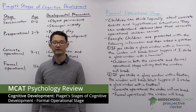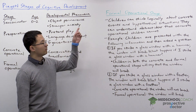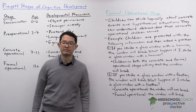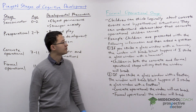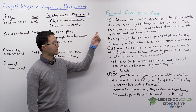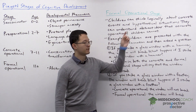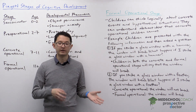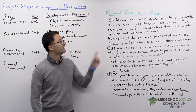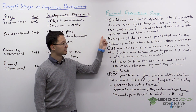In this video, we're going to go over the last stage of Piaget's Stages of Cognitive Development, the formal operational stage. This is from ages 11 and up. During this stage, children can think logically about both concrete events and hypothetical situations. In contrast to concrete operational stage children, these children can understand abstract ideas.